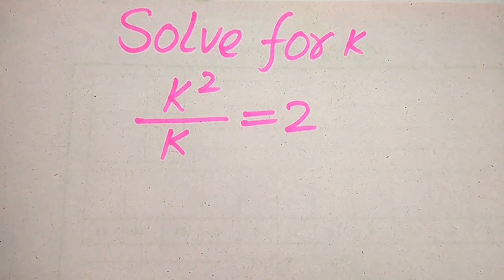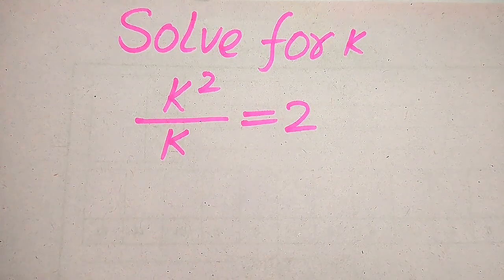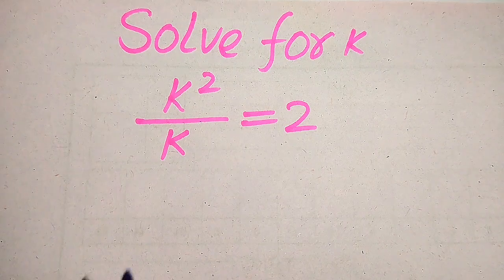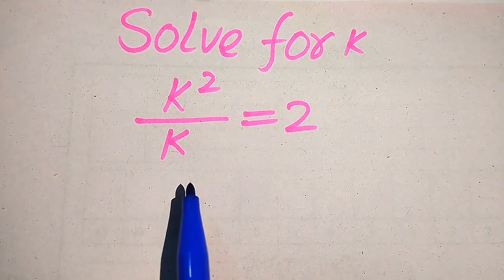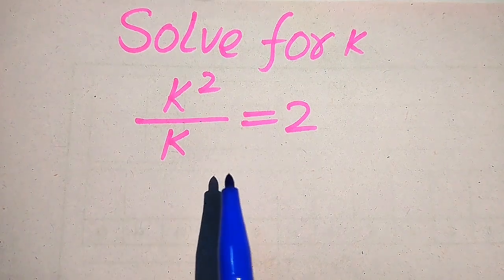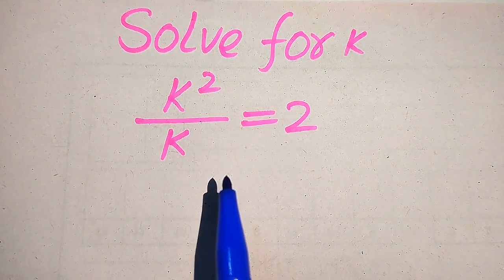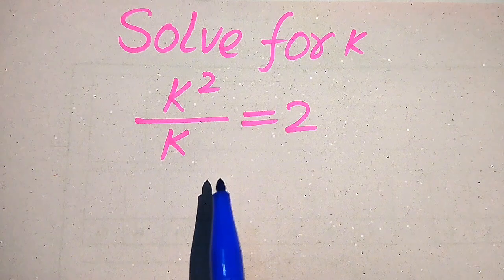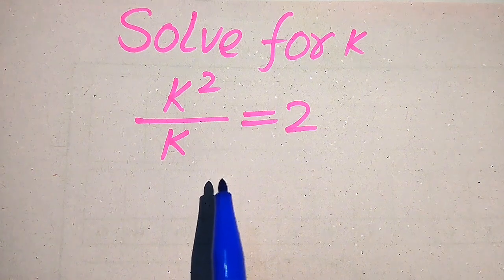Hello everyone. How to solve this problem: for the values of k, if we have k squared divided by k equals 2, and we solve this problem for all the values of k.